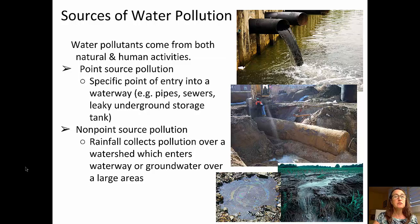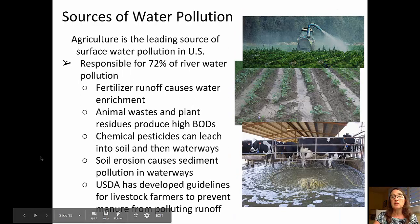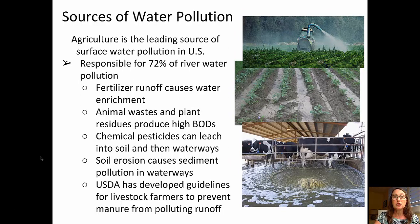Water pollutants come from both natural and human activities and are in two different varieties. First, point source pollution — this is pollution that enters waterways from a specific identifiable location, such as a pipe, a sewer, or possibly a leaky underground storage tank. Non-point source pollution is often the result of rainfall, which collects pollution over a watershed and channels it into a waterway or into the groundwater system.